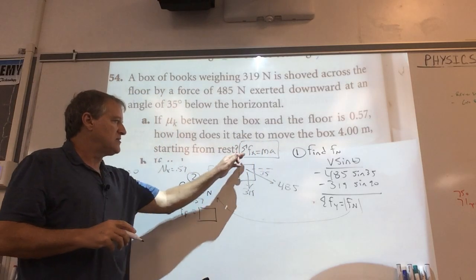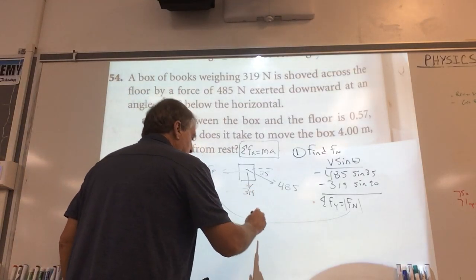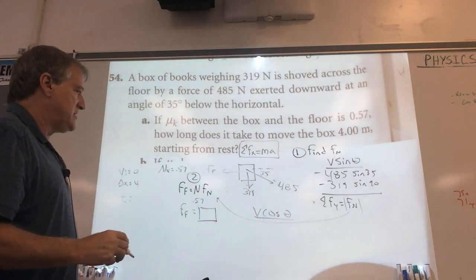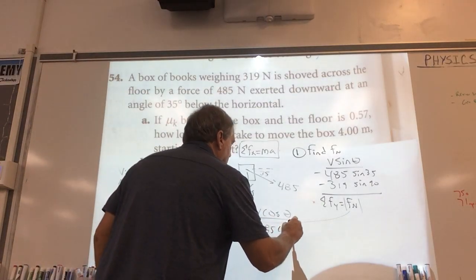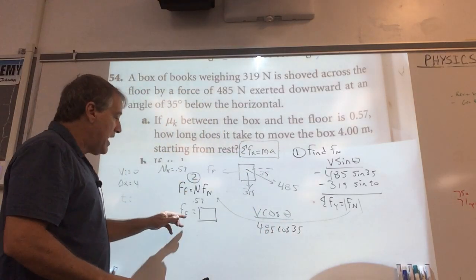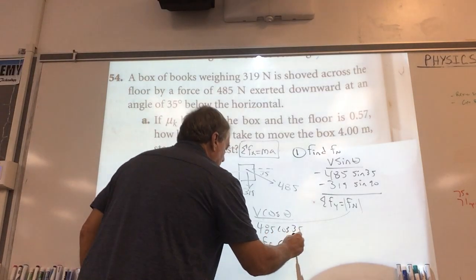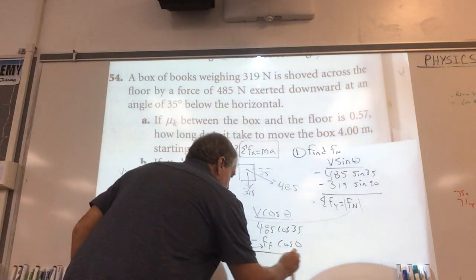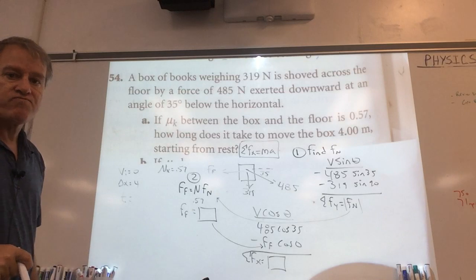We know the sum of the forces in the x is equal to m times a. So I'm doing all this work to find the sum of the forces in the x direction, which is just v cosine theta. So let's put it down here. I know v cosine theta is the sum of the forces in the x. And let's just do it. I know it's 485 cosine of 35. That's going to be positive. It's going to the right minus this force of friction here times the cosine of 0 degrees because it's straight back. That's going to give me an answer here that is the sum of the forces in the x direction. Do you all see that?